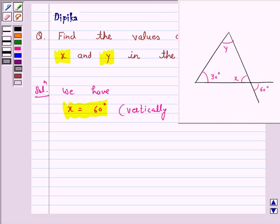Now we know the angle sum property of a triangle, which says the total measure of the three angles of a triangle is 180 degrees. So we have by angle sum property of a triangle...